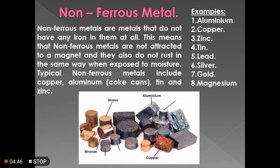Now we are going to see non-ferrous metals. Non-ferrous metals are metals that do not have any iron content in them. These metals are not attracted to a magnet and they also do not rust when exposed to moisture. The typical examples of non-ferrous materials are aluminium, copper, zinc, and so on. Now we are going to see them one by one.